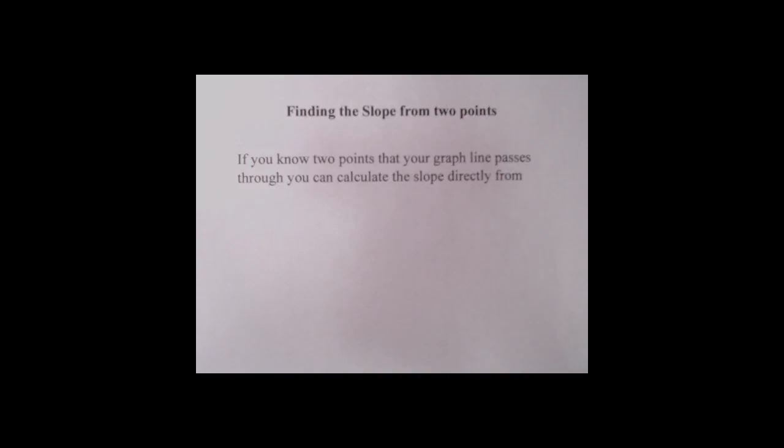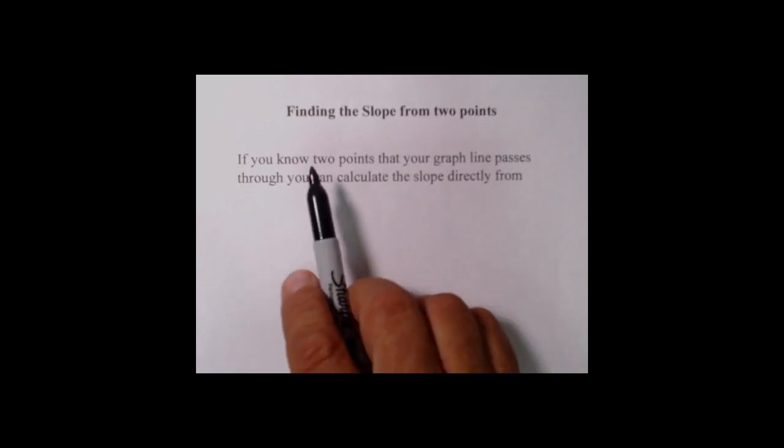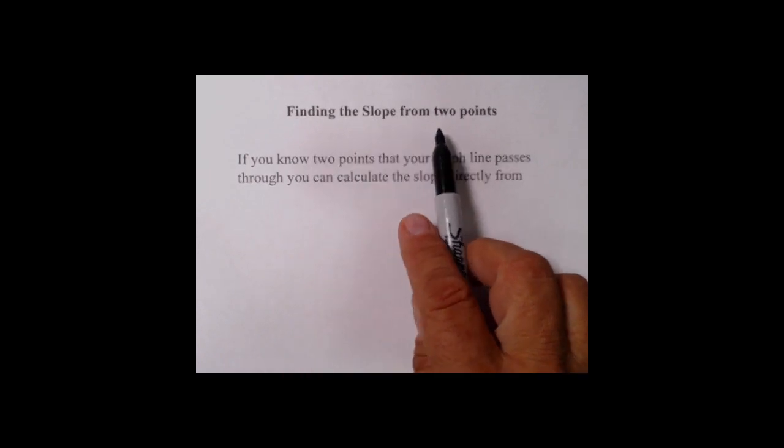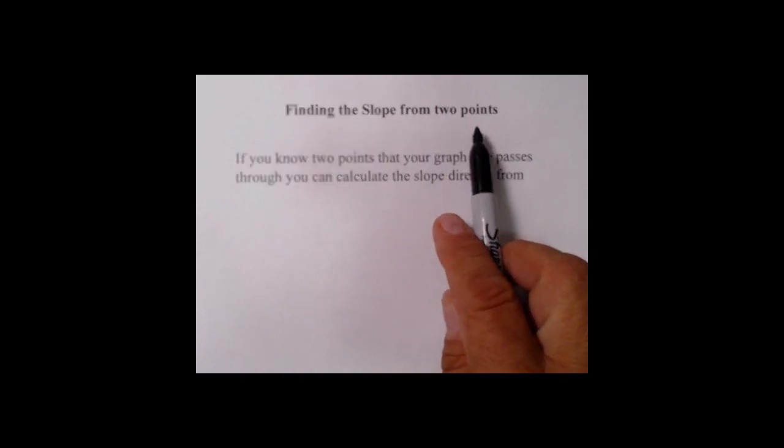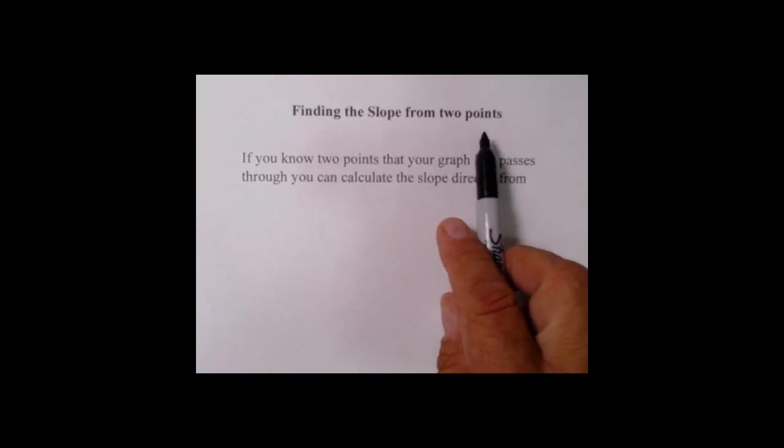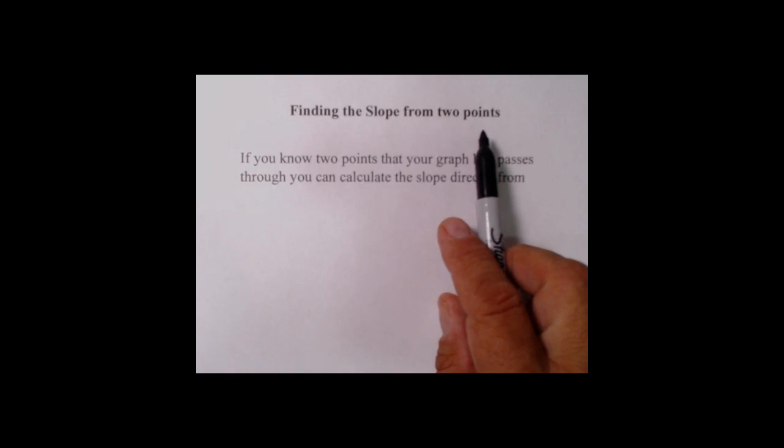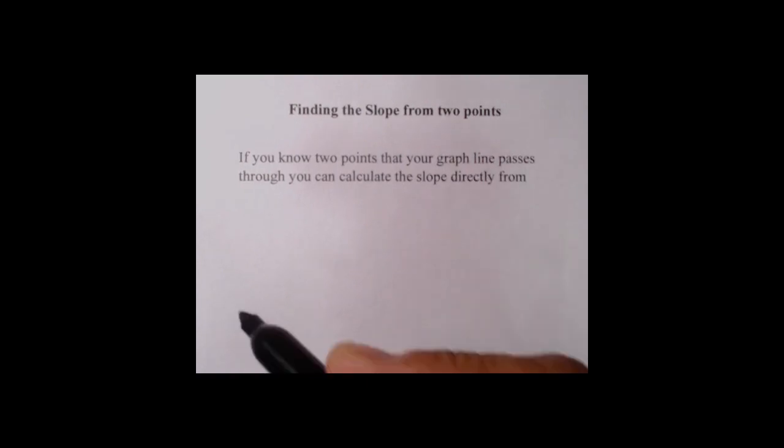Hi, I'm Adolph Oliver, and this video clip is about finding the slope of a graph line when we're given two points on the line. It's another method to be able to find slope.